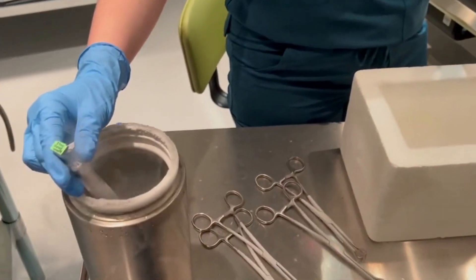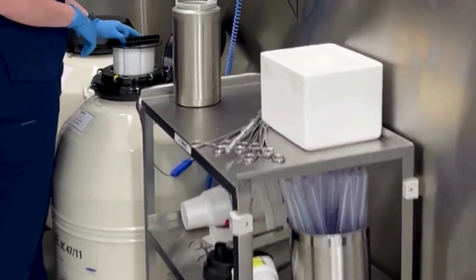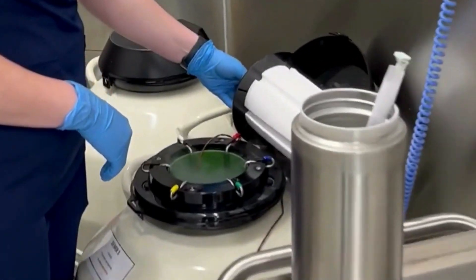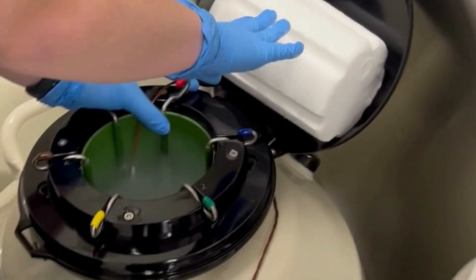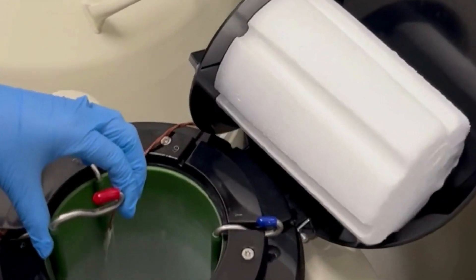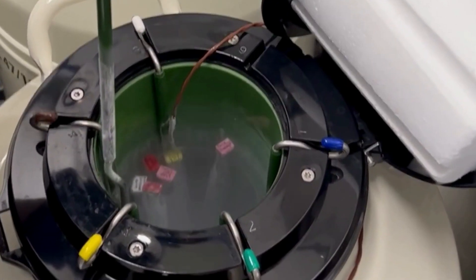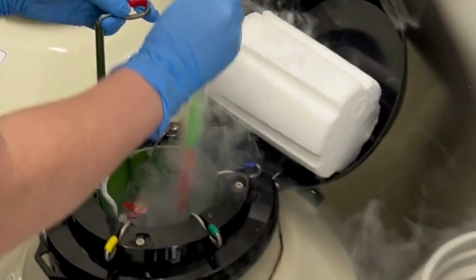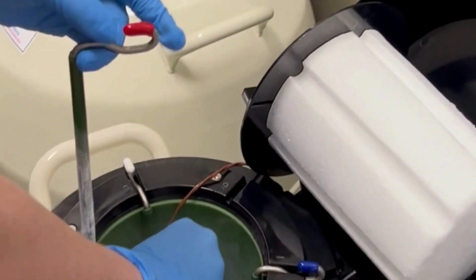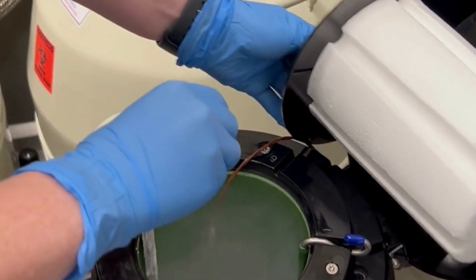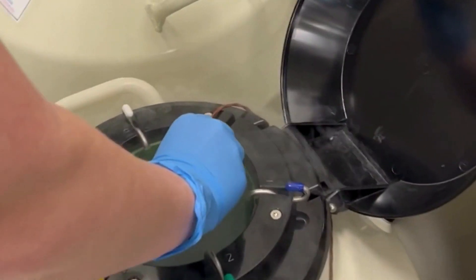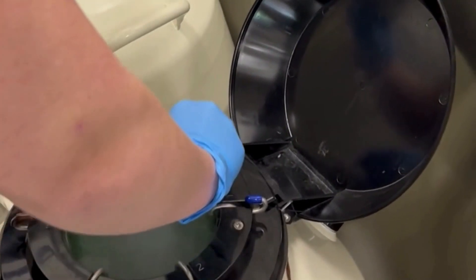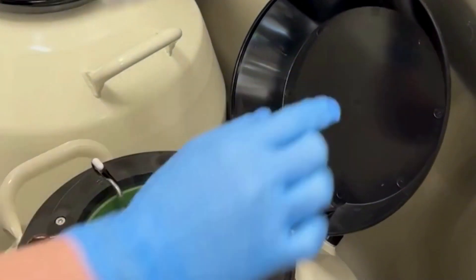The cane is then stored in a designated canister inside of our storage dewar, which stays full of liquid nitrogen. And that keeps the embryos frozen at a nice cool temperature of negative 320 degrees Fahrenheit. They can stay frozen indefinitely. Then we just wait for your transfer day.